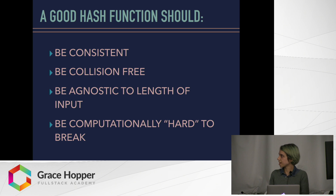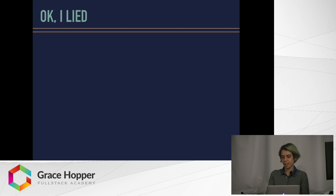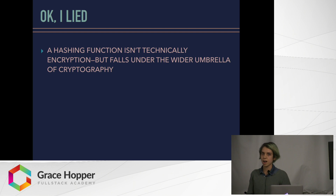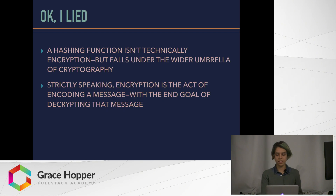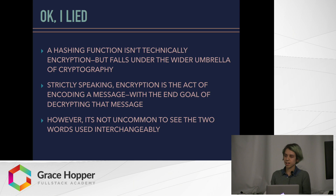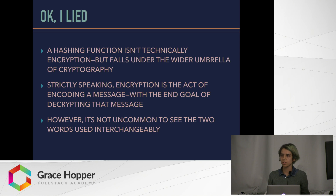I have a confession to make, which is that a hashing function isn't technically encryption — it falls under the wider umbrella of cryptography. Technically, encryption is the act of encoding a message with the end goal of decrypting the message. With a hashing function, you never actually want to decode the hash. However, it's not uncommon to see the two used interchangeably, and I was definitely confused about it when I began researching this, so I just wanted to talk about them together.